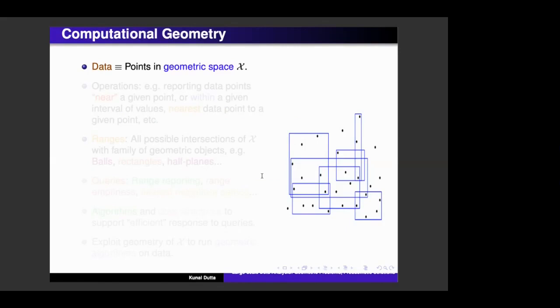Okay, so here's a brief primer on computational geometry. So in computational geometry, the typical way of modeling is that you think of data as points in some geometric space. And we want to answer queries about the data. So for example, we are given a point and we want to answer like how many data points are close to this point or within, or we want to tell the number of data points, which are in a given interval of values, or we want to find the nearest data point for a given point in the space and so on.